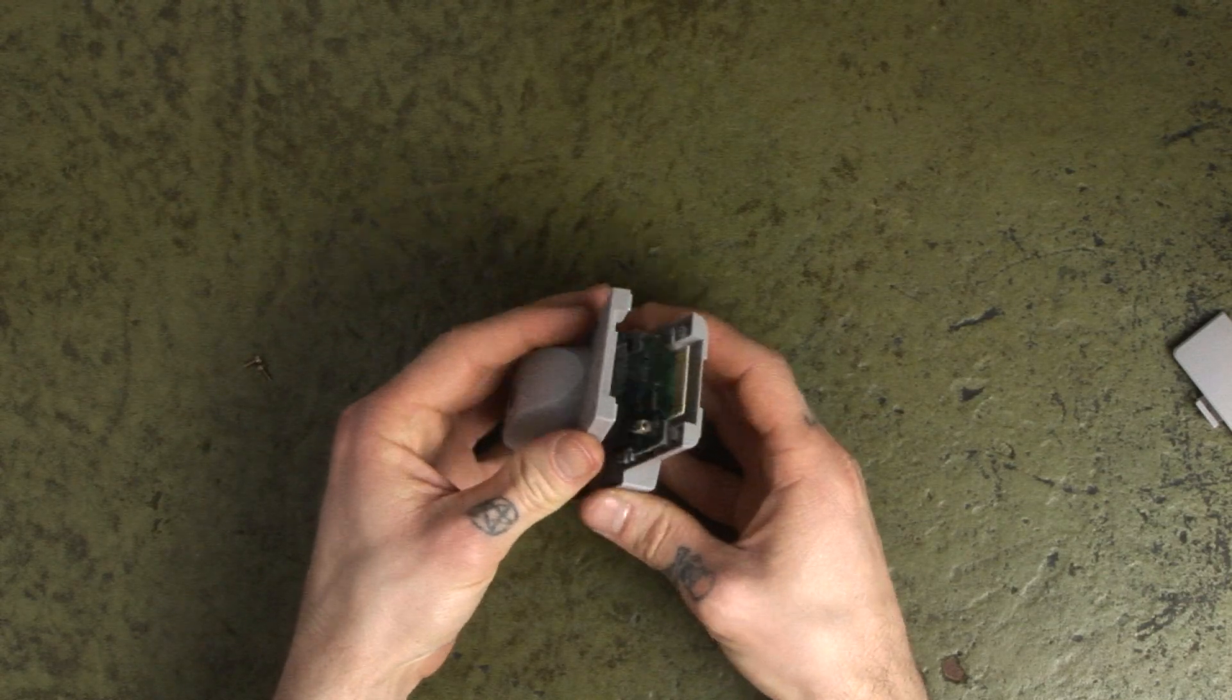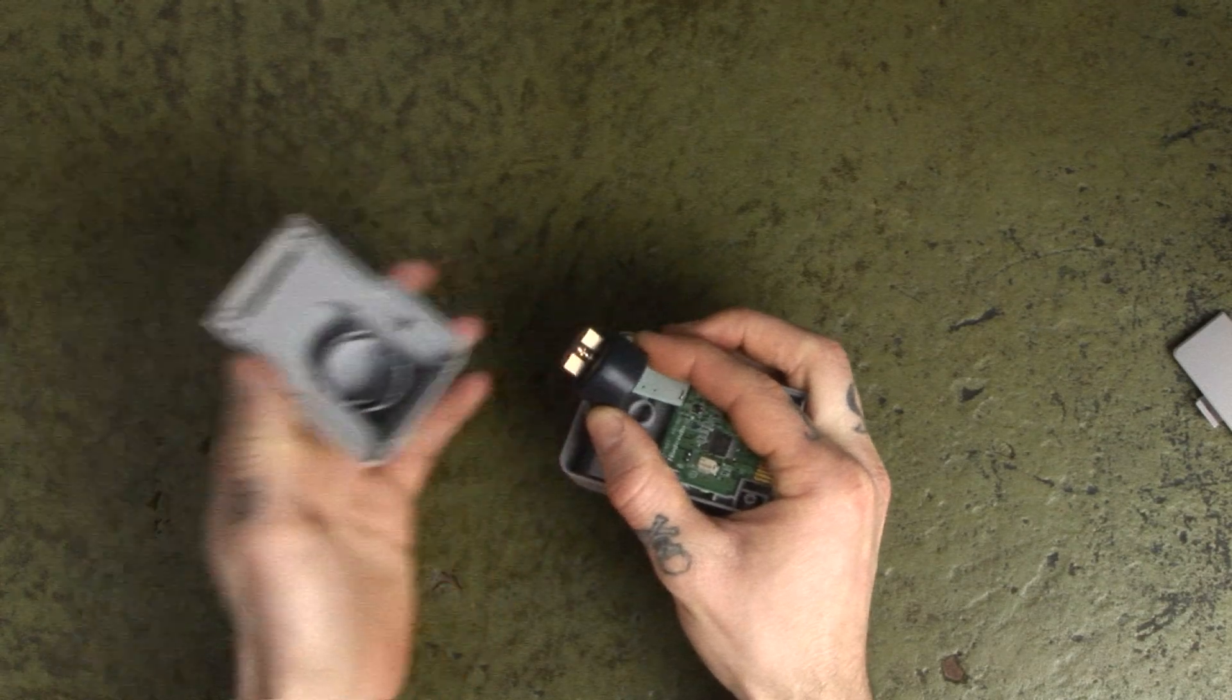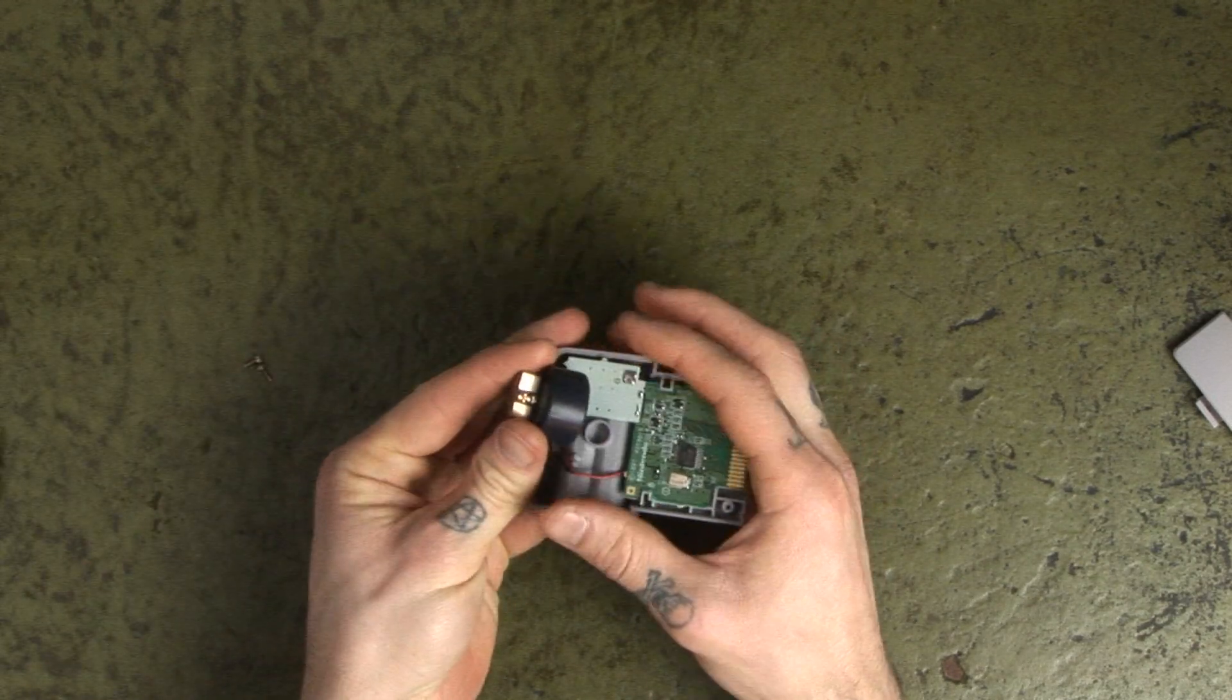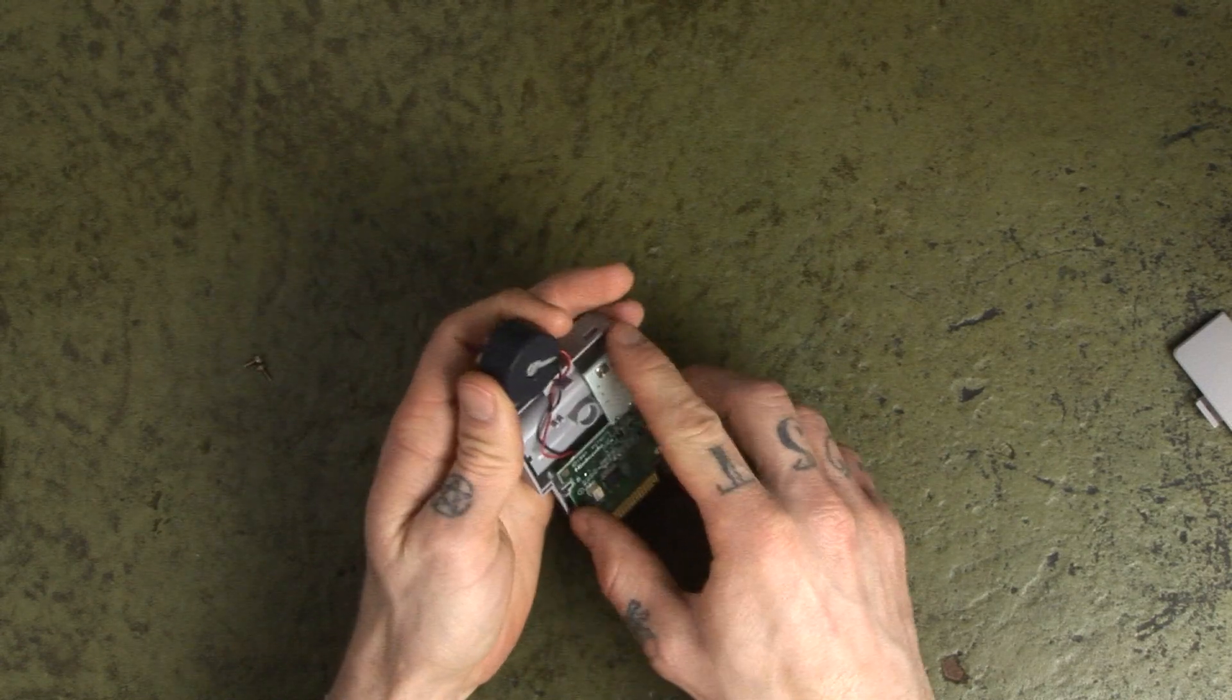The motor with a weighted rotor is in one half. The other half contains the circuit board. Remove both of these from the case.